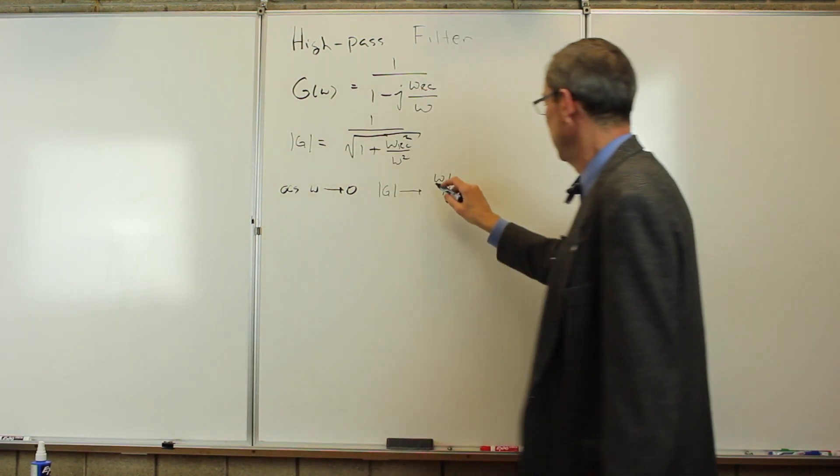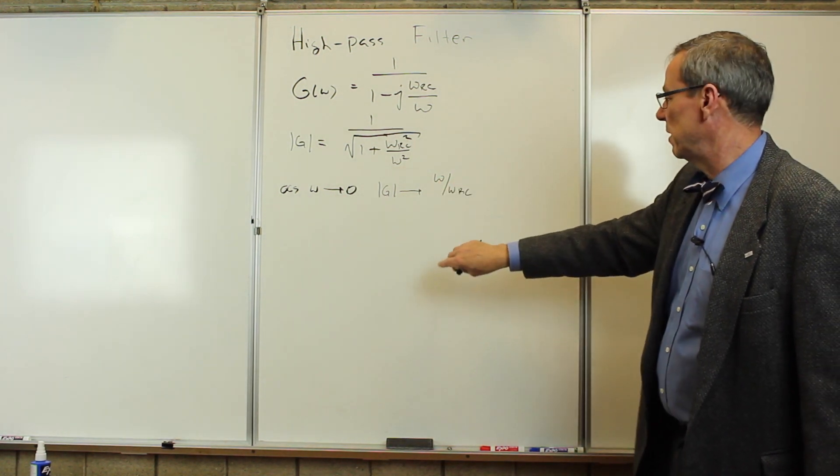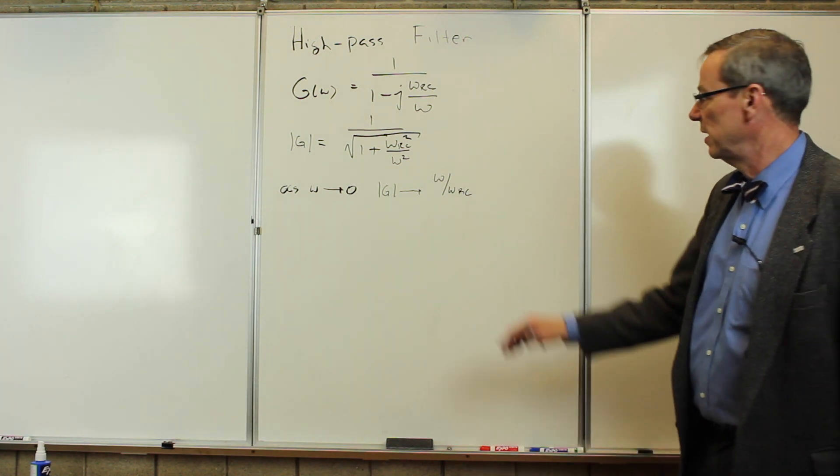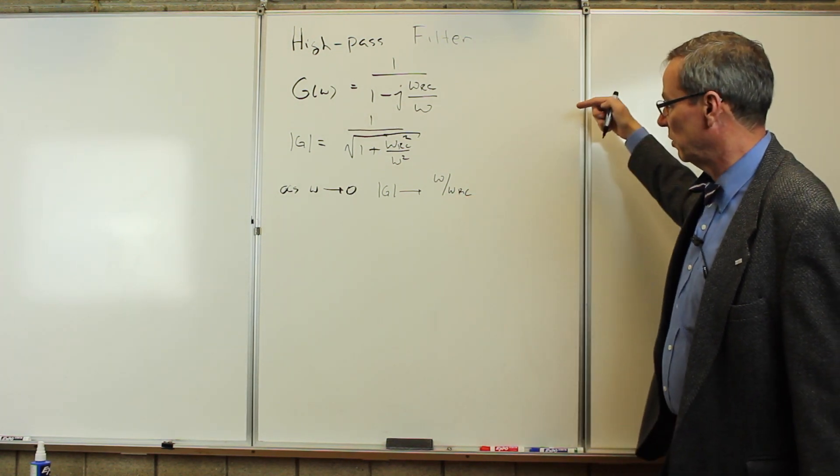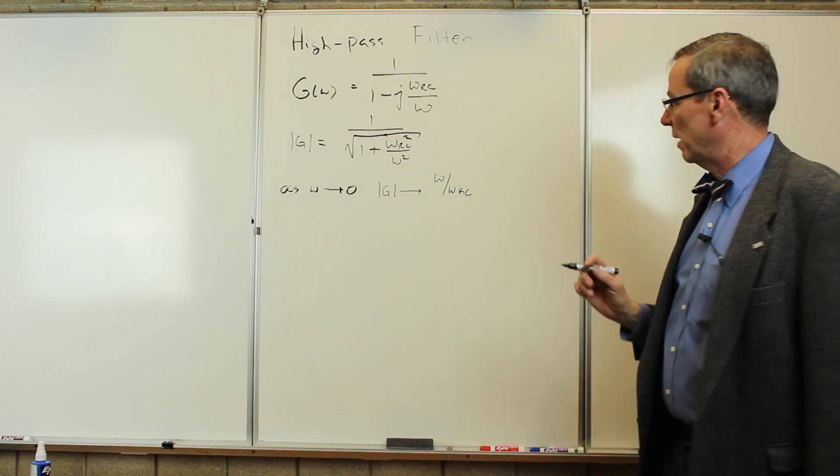As omega goes to zero, the gain is going to rise with the frequency to the first power, so it's going to be on the Bode plot increasing with 20 dB per decade. So for low frequencies, as we go lower and lower, it's falling off. Hence, it's cutting low frequencies out.